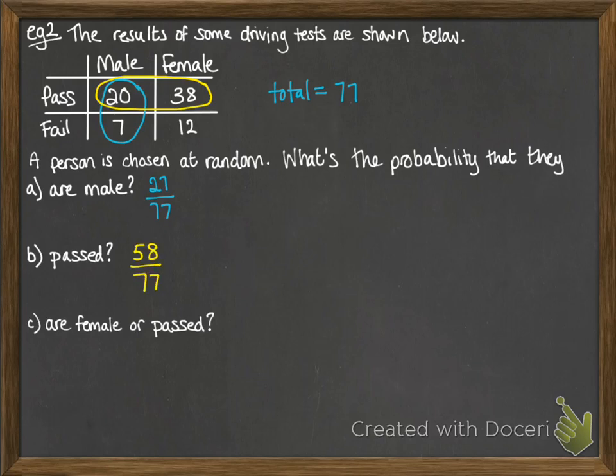And the probability that they are female or they passed, well, that would be that section there. So that's 70 out of 77. So female or passed means they could be either or both. So we need all three of those numbers there. And a little something to finish off.